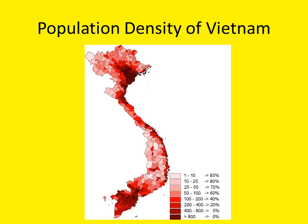This map displays the population density of Vietnam in 2010. As you can see, the areas of densest population can be found in the Red River Delta, the Mekong River Delta, and along the coastlines. There are just under 90 million people in Vietnam as of 2012, making it the 13th largest country in the world in terms of population. Interestingly, the rate of population growth has started to slow in the past decade, in part due to the emerging middle class. From 2002 to 2012, the middle class increased from about 7 million to approximately 25 million people.